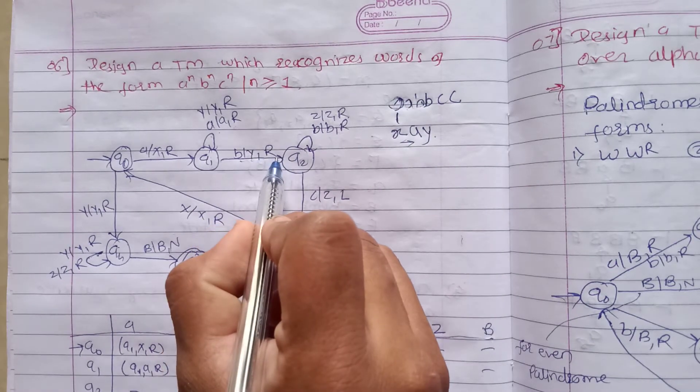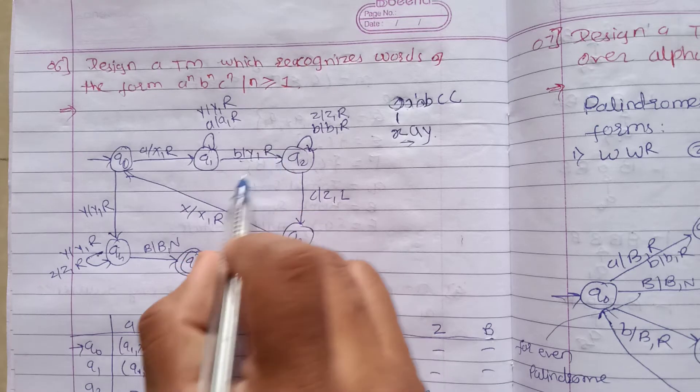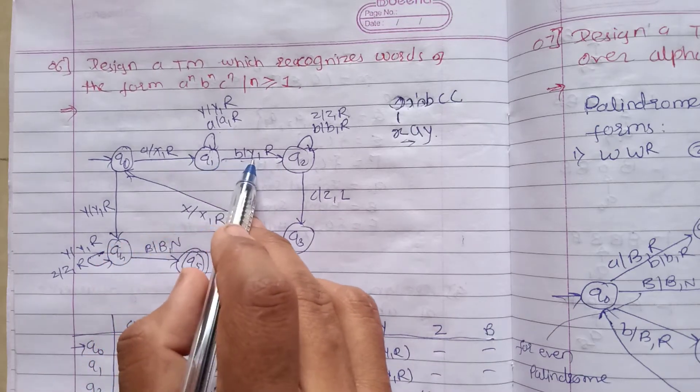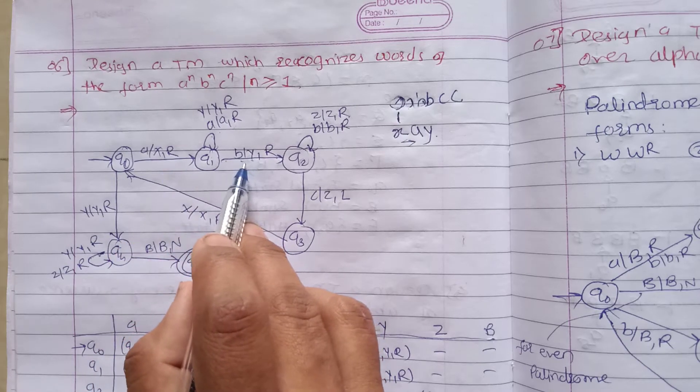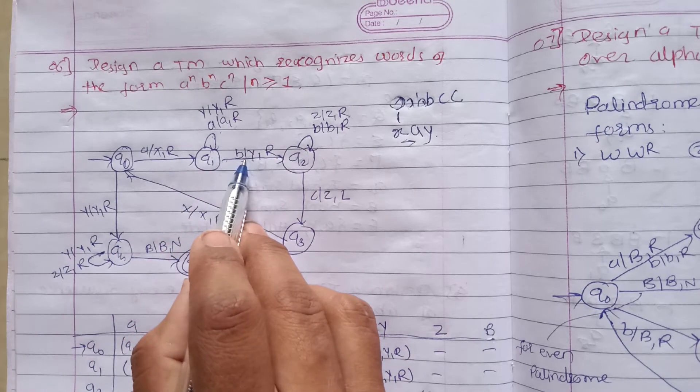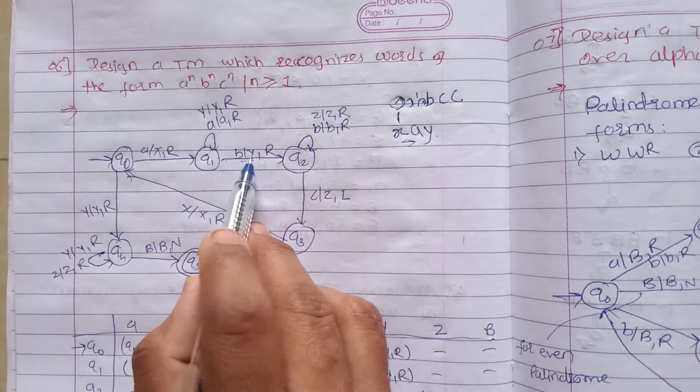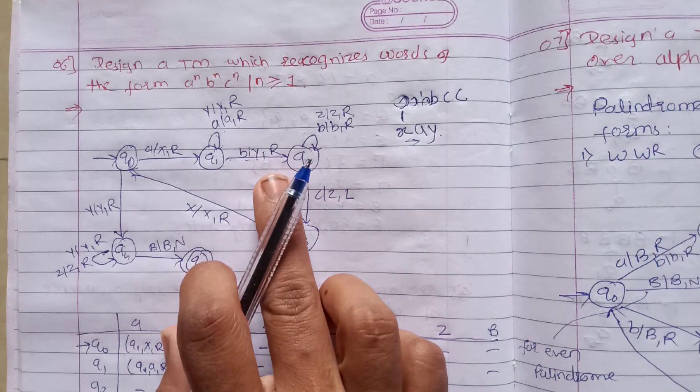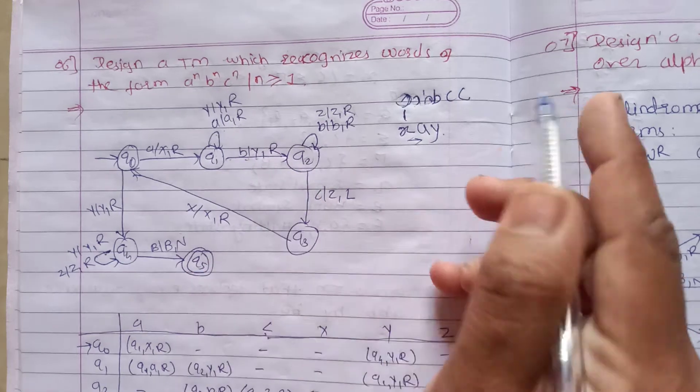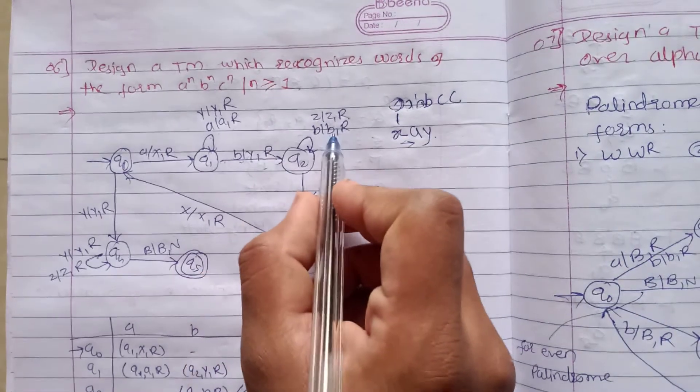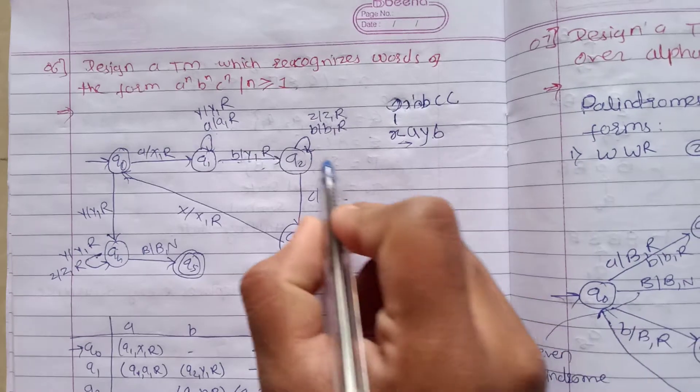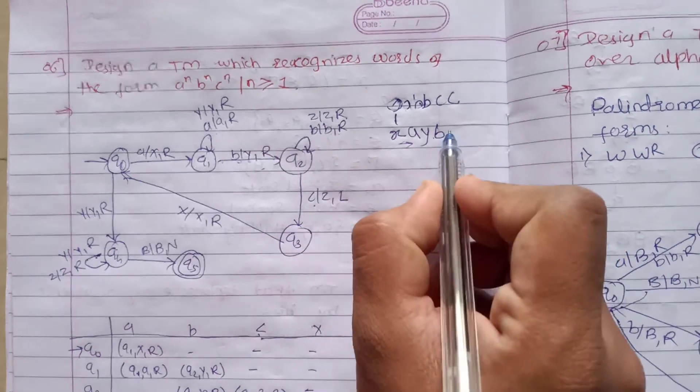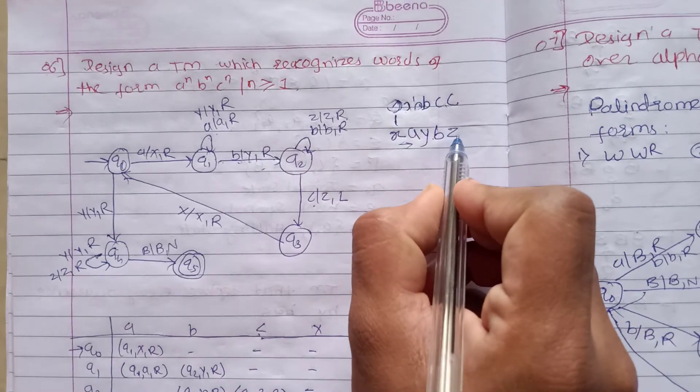Whenever we do replacement or change movement, at that time we change the state. That's why here when b input comes, we convert it to y and change state. After that, if there's another b, it should be as it is, so we put a loop there. Now when the first c comes, c will be converted into z.